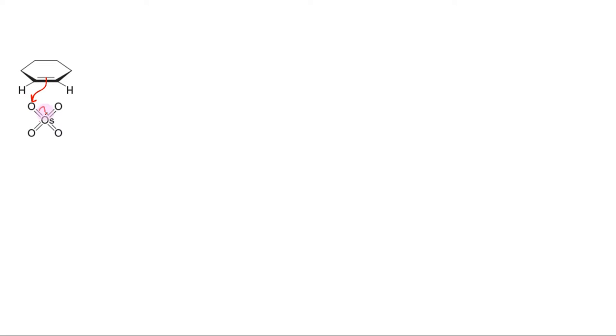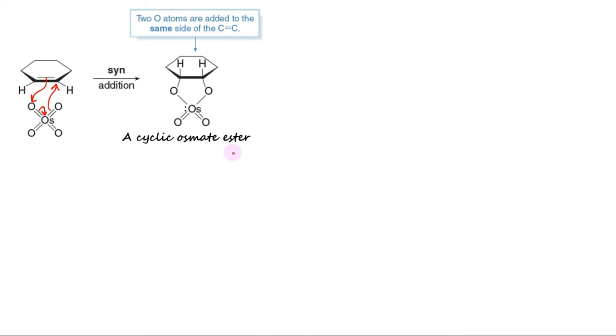When an alkene is treated with osmium tetroxide, OsO4, a cyclic osmate ester is produced. Osmium tetroxide adds across the alkene in a concerted process. In other words, both oxygen atoms attach to the alkene simultaneously. This effectively adds two groups across the same face of the alkene, hence the syn-addition.